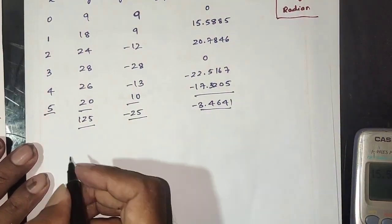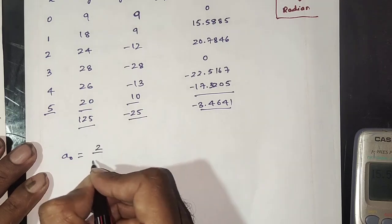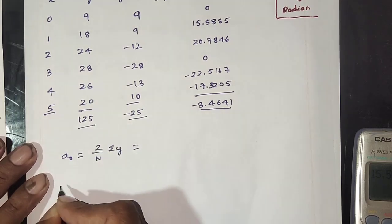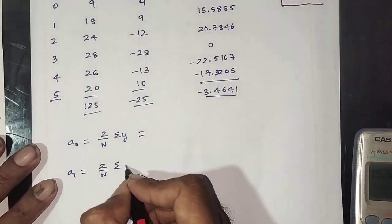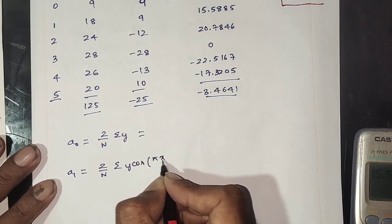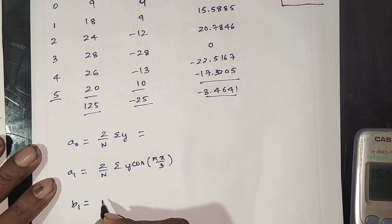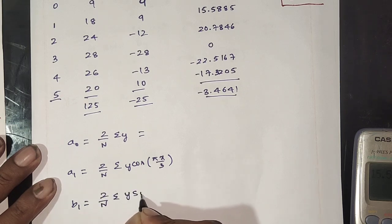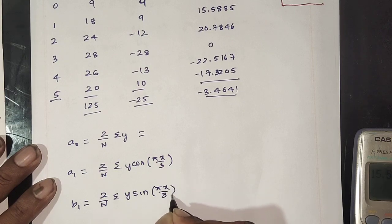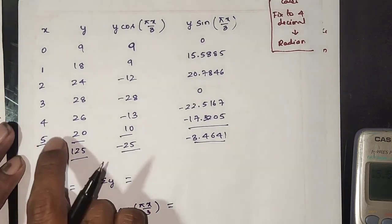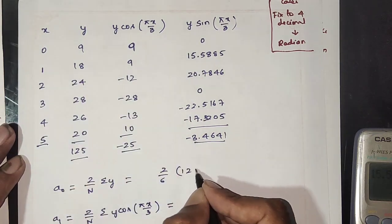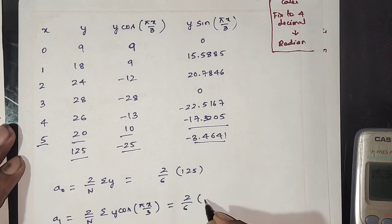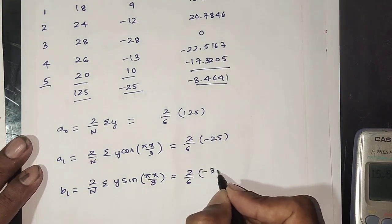Next, n = 6. a0: formula is 2/n × summation of y. a1: formula is 2/n × summation of y·cos(πx/3). b1: formula is 2/n × summation of y·sin(πx/3). Here n = 6, so 2/6 × summation of y gives: 2/6 × (−25) and 2/6 × (−3.4641).